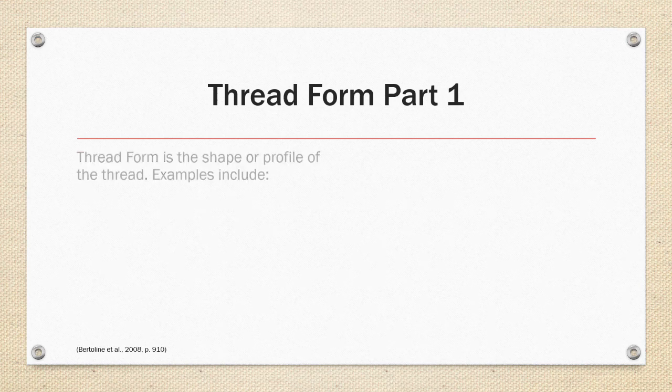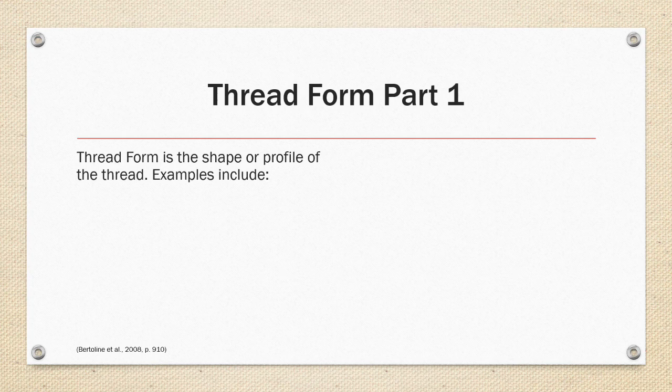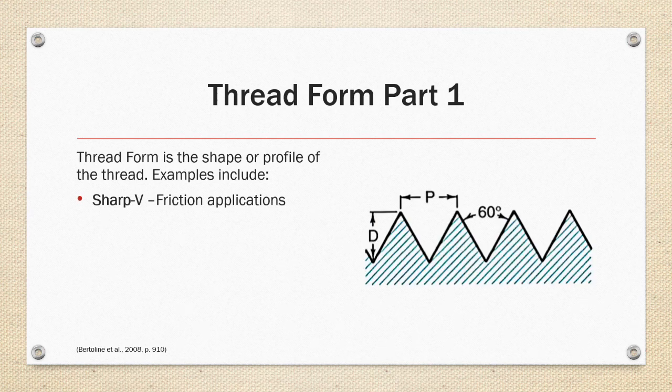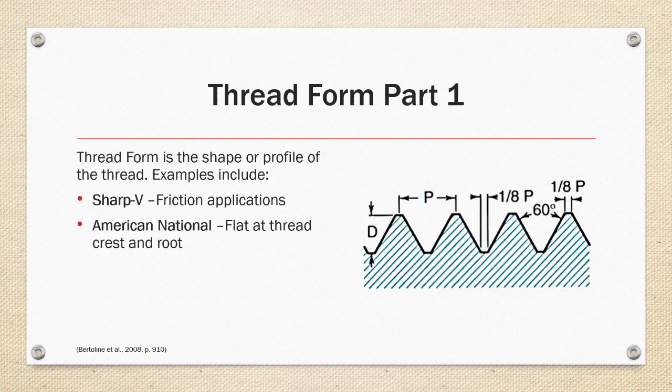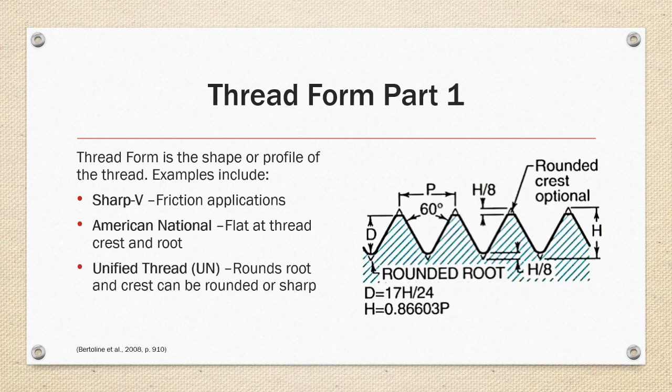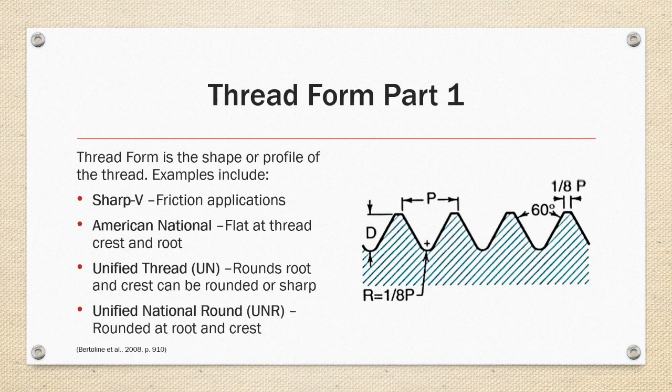Thread form part one. The thread form is the shape or profile of the thread. Examples include sharp V, friction applications. It was the first thread developed in the United States and was replaced shortly after by the American National thread which has a flat thread crest and root, reducing the friction on the thread. The Unified thread rounds out the root and crest can be rounded or sharp. This standard replaced the American National standard but is very similar. And the Unified National Round has a root and crest that is rounded.